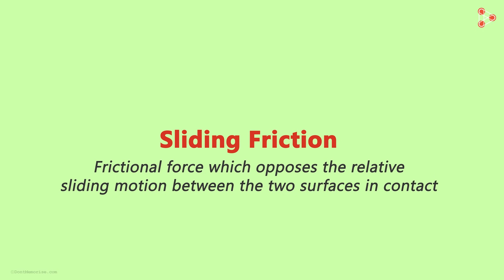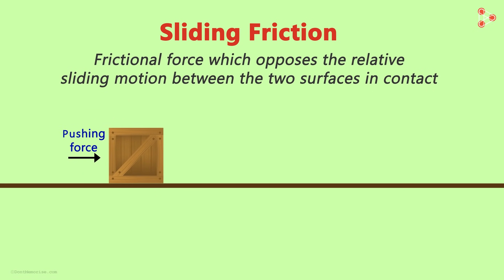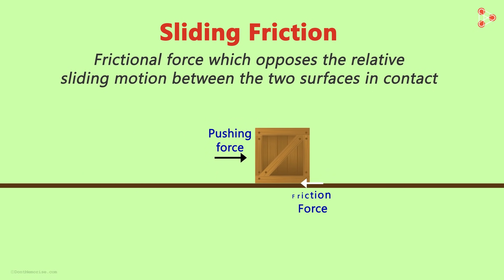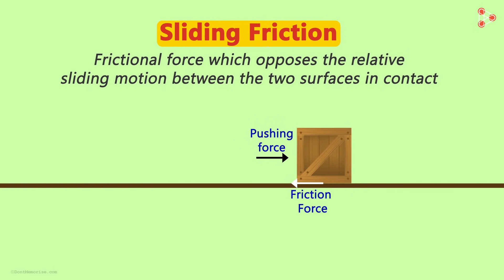What does this mean in simple words? It simply means that if an object is in motion on a surface, the frictional force that is offered by the surface is called the sliding friction. The key words here are sliding motion. The two surfaces have to be in relative motion with each other.